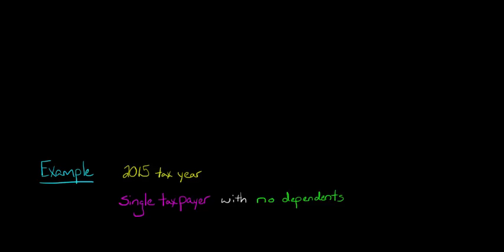So let's say that we have a single taxpayer, and by single, I mean that's their filing status. There are other filing statuses — you could say someone's filing status is married filing joint, which means there are two people who are married and filing their tax return together. But we're just going to say we have a single taxpayer filing as an individual.